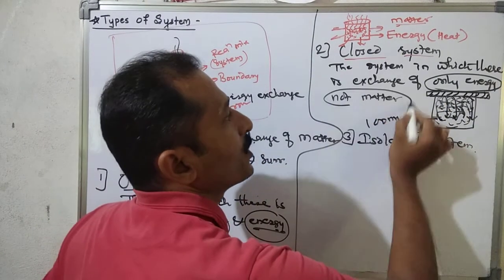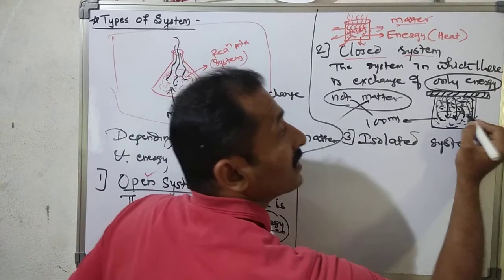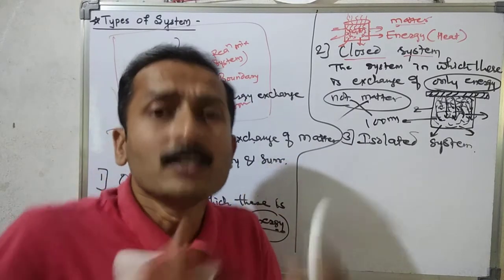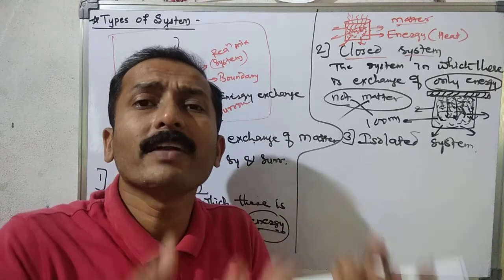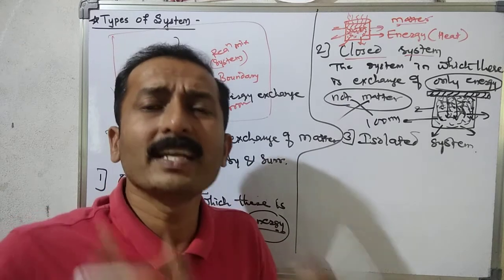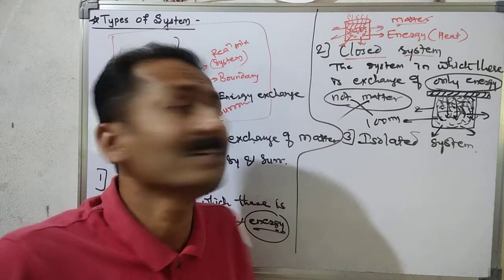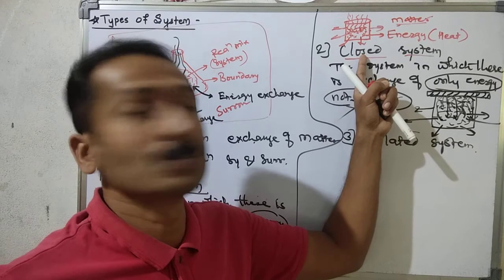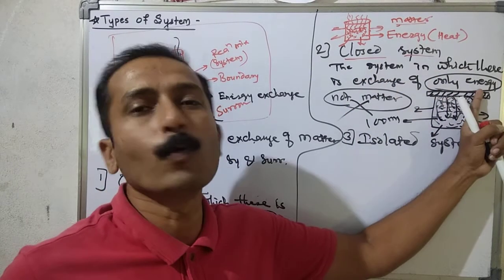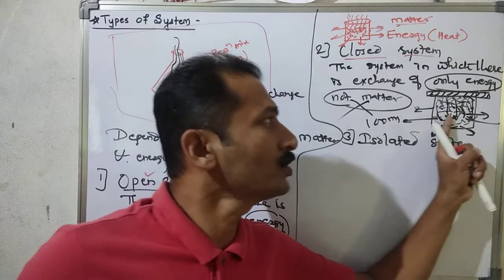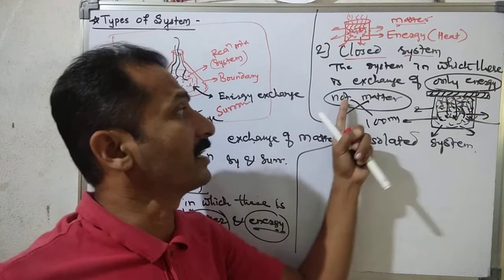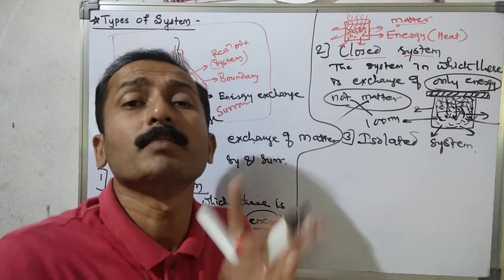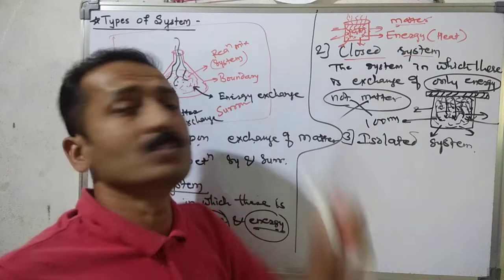Matter is not exchanged — matter does not go out. However, heat is exchanged. So the system in which there is exchange of only energy — that is, heat exchange occurs — but matter is not exchanged, is called a closed system.